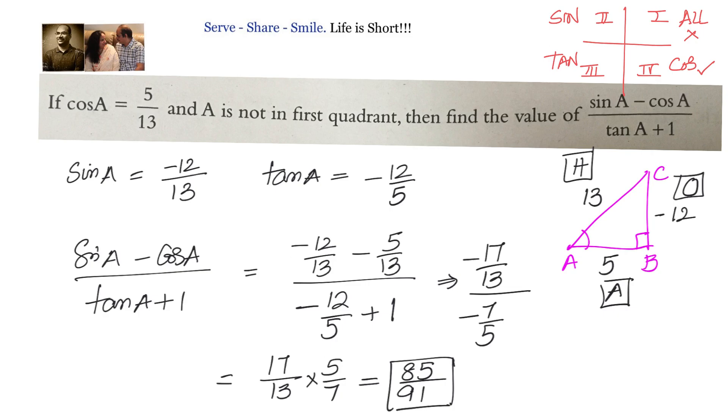We have sin A minus cos A by tan A plus 1 equals to 85 by 91.